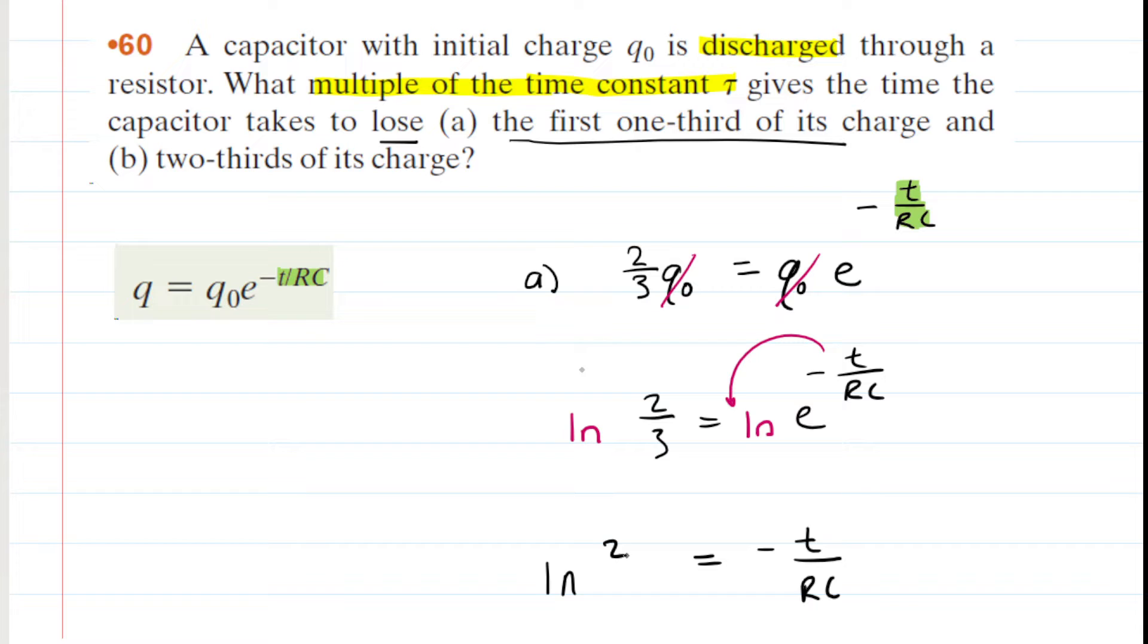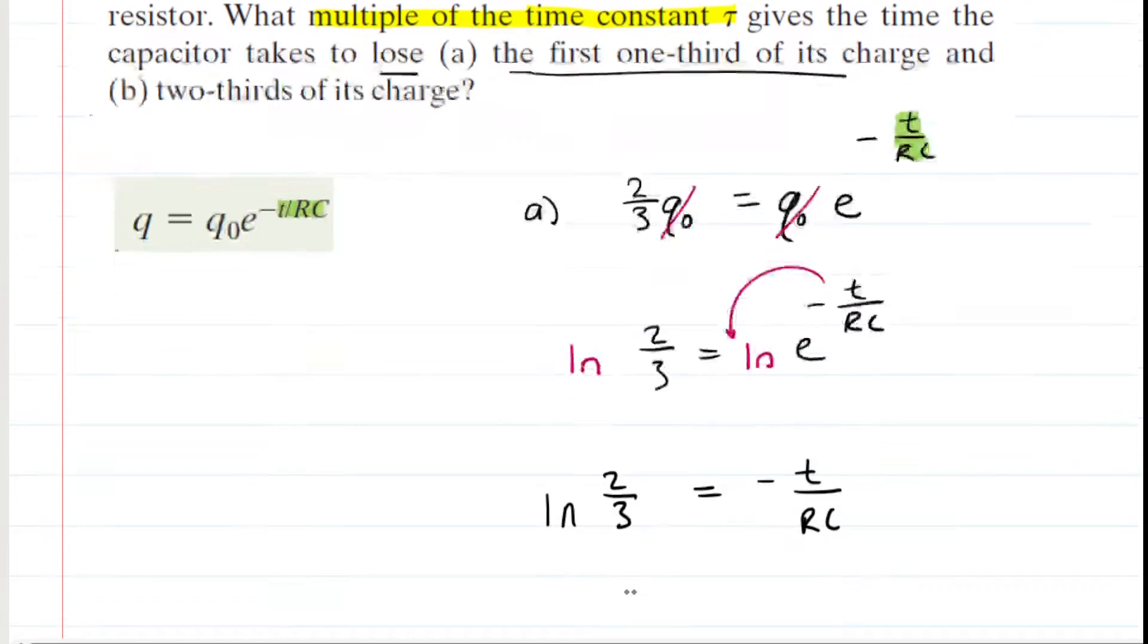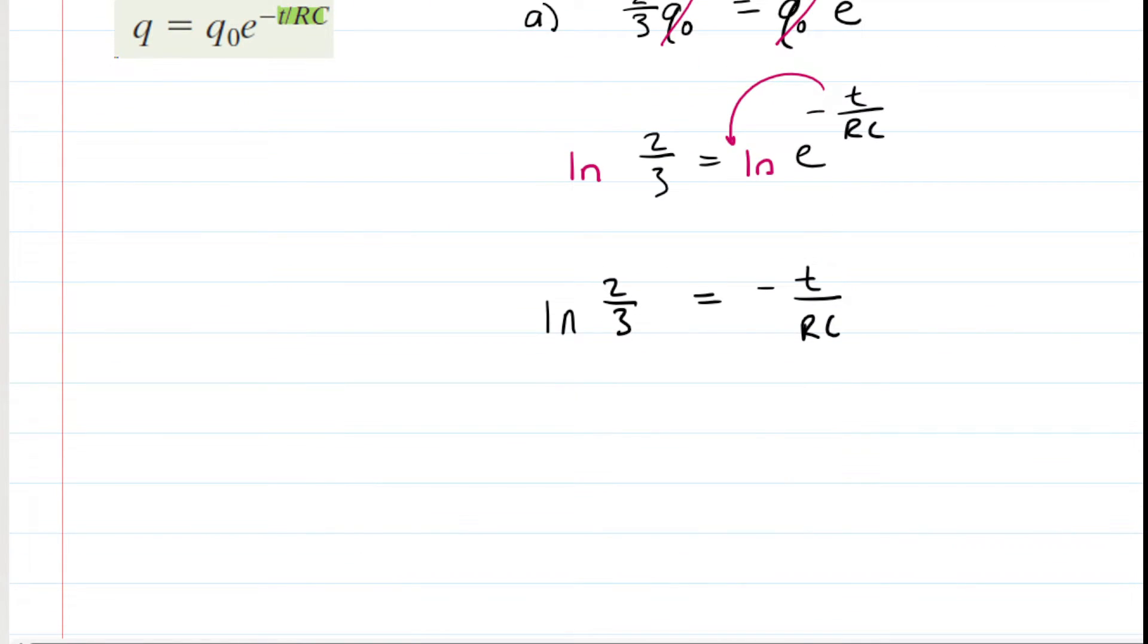We have the natural log of two-thirds on the left side. We're just one step away from isolating the fraction. Divide both sides by negative 1. So you would have negative natural log of two-thirds equals the ratio we're solving for. The negative natural log of two-thirds is 0.41 approximately. That's the correct answer to part A.